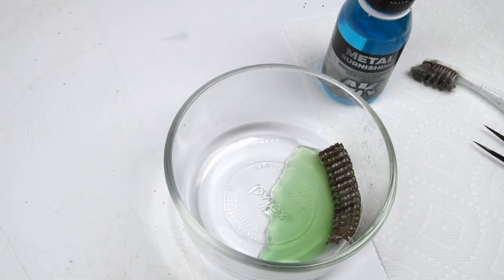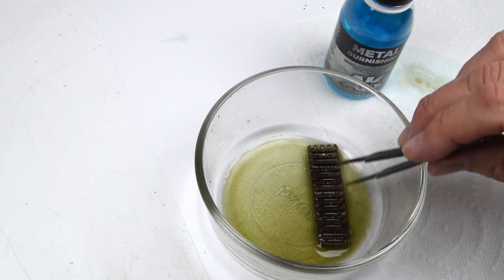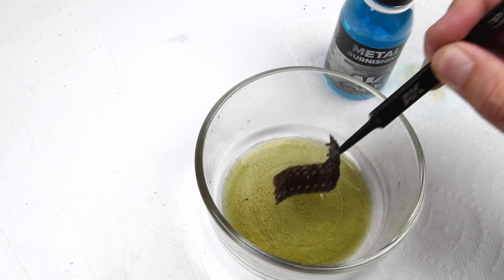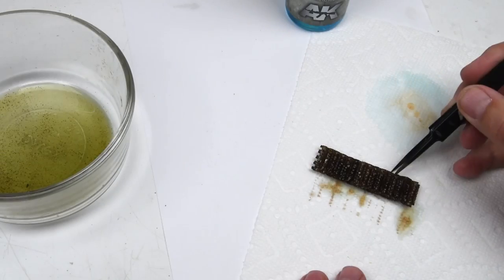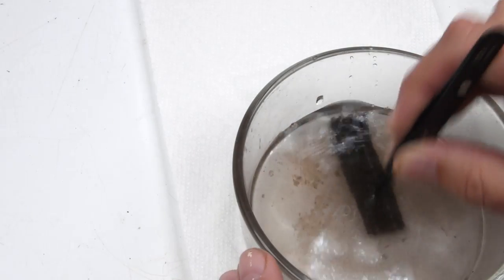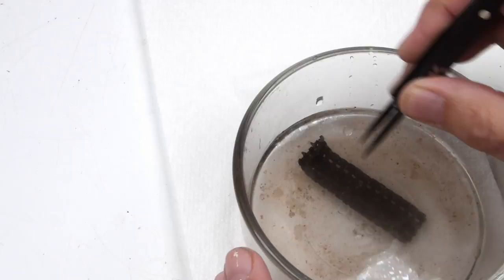The longer it soaks in the solution, the darker the part will get. Once you've come to the proper color, just pull it out of the solution, place it onto a paper towel, remove the excess moisture or solution. And then finally just a quick rinse in some clean water to remove any of the excess and we're ready to move on.